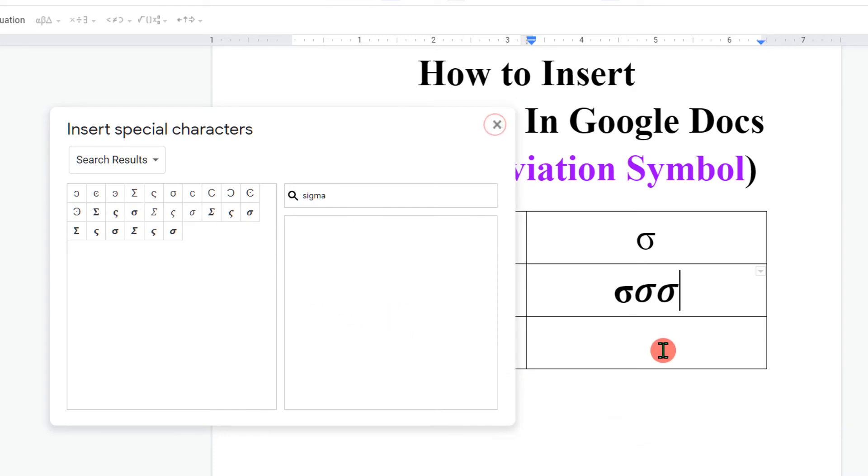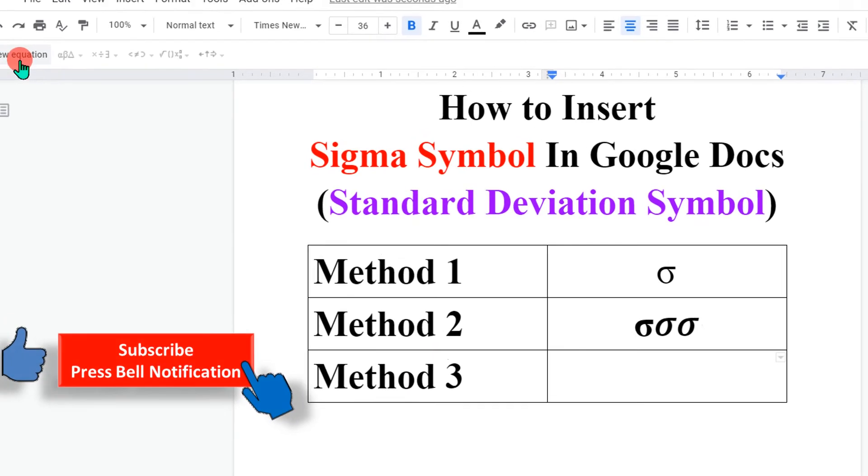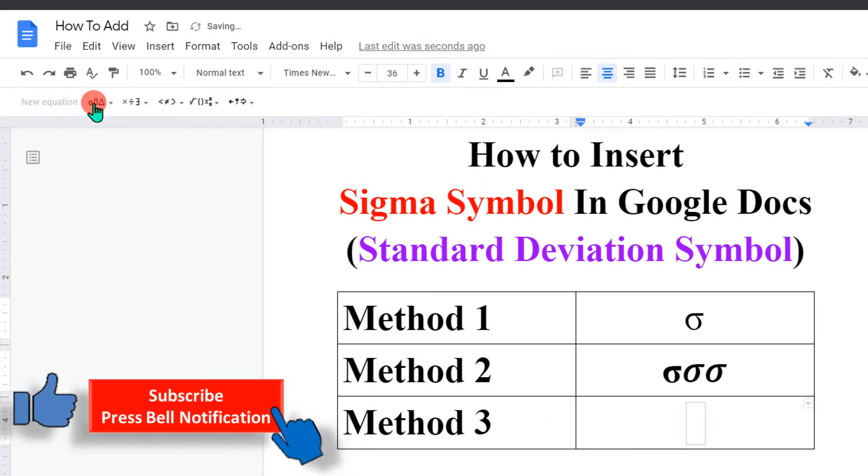In the third method, click on New Equation, then go to Greek Letters. Under the Greek Letters you will see the sigma option. Just click on it to insert it.